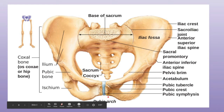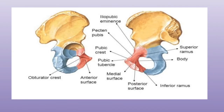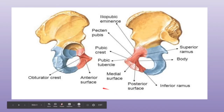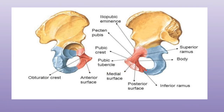The pubic arc is formed by the inferior border of the right and left hip bones' ischiopubic rami. The inner surface is convex and smooth and is divided into three main areas — upper, middle, and lower — by two ridges. The outer or lateral surface is roughened for the attachment of muscles.